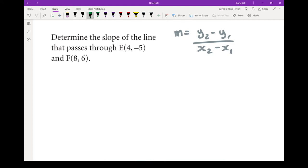Let's label our points. Point E will be our first one, so that's x1 and y1. F will be our second one, so that's x2 and y2.